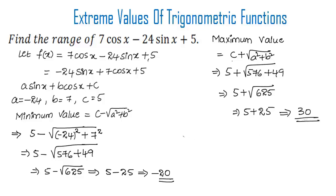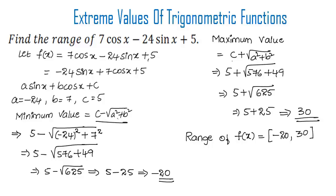Hence, the range of f(x) is [-20, 30]. To summarize: the minimum value of f(x) = a·sin(x) + b·cos(x) + c is given by c - √(a² + b²), and the maximum value is given by c + √(a² + b²). This was a basic introduction on how to solve examples on extreme values of trigonometric functions.